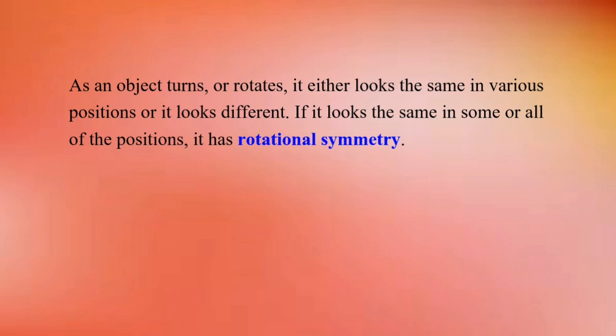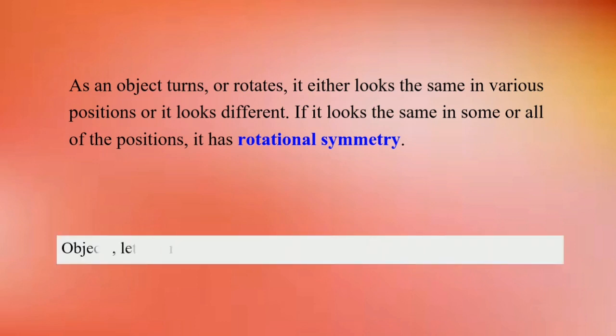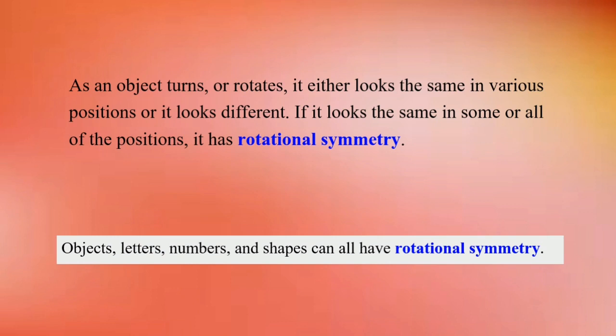When an object moves through a complete 360 degrees, it will look the same at the end. If it looks the same at any position below 360 degrees, it has rotational symmetry; if not, it does not. Objects, letters, numbers, and shapes can all have rotational symmetry.